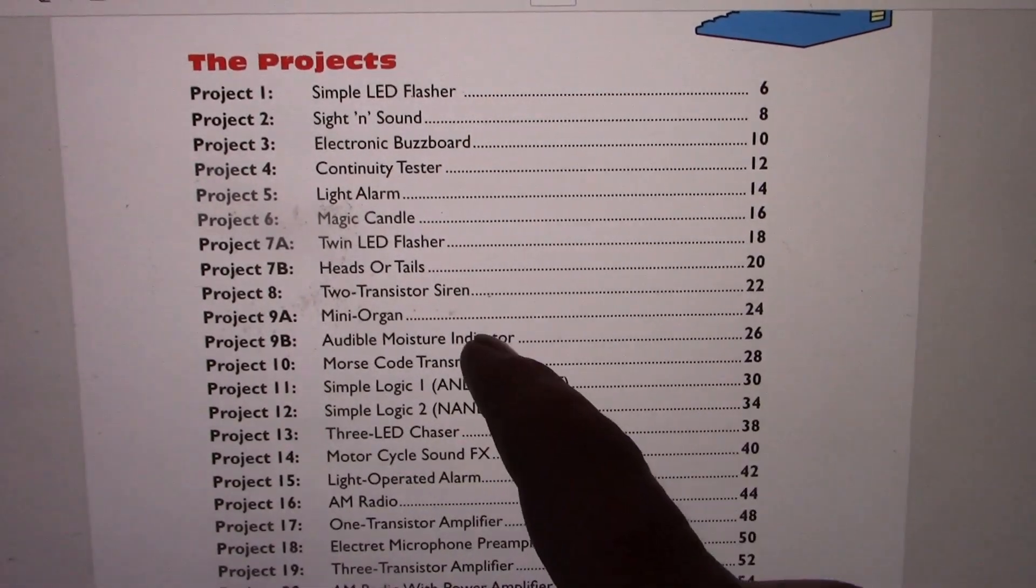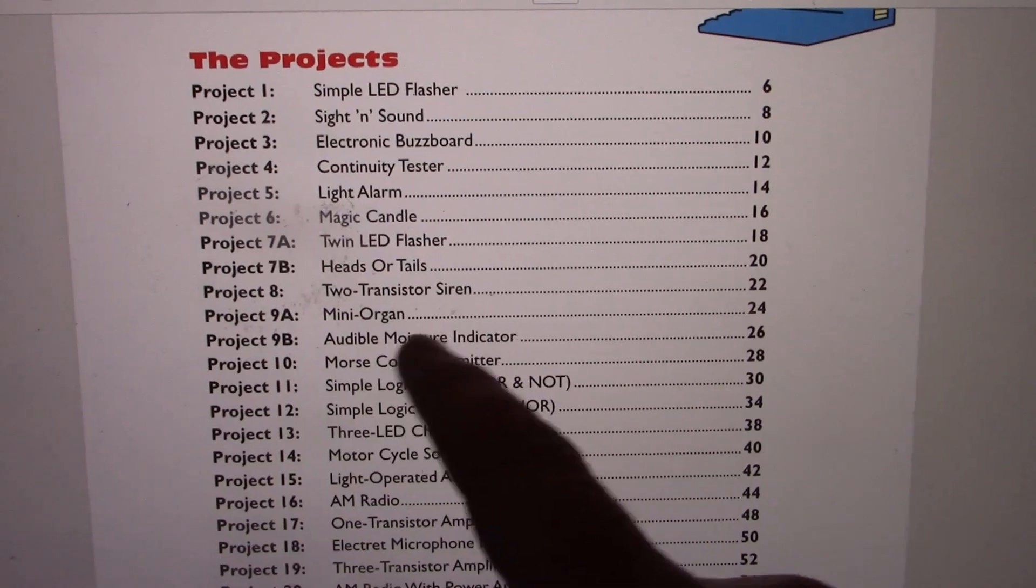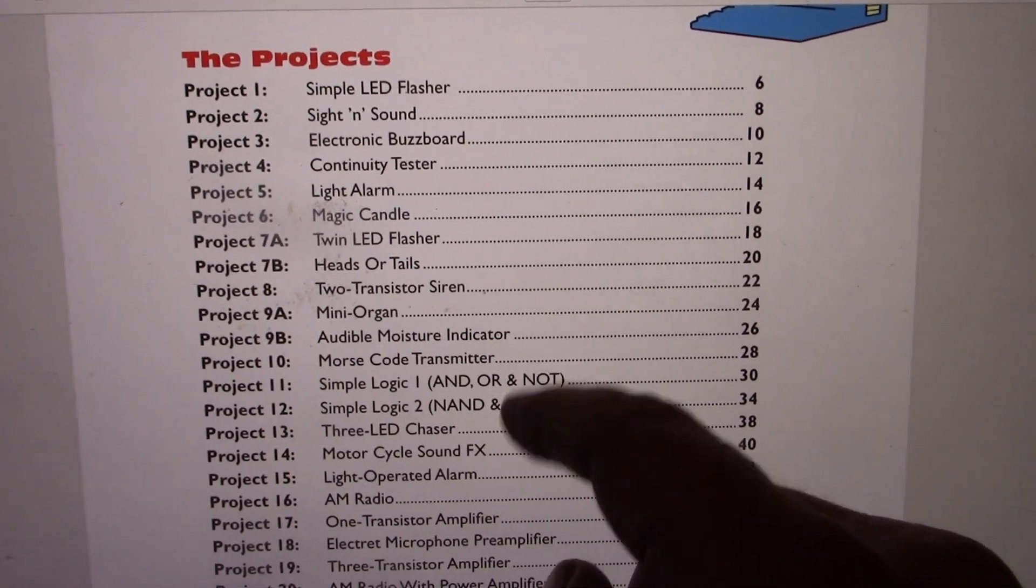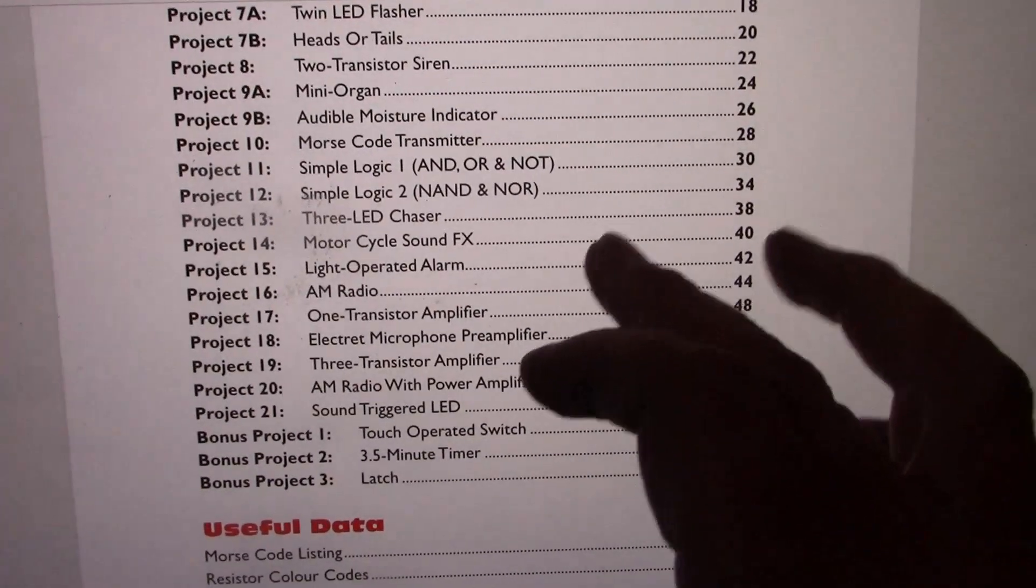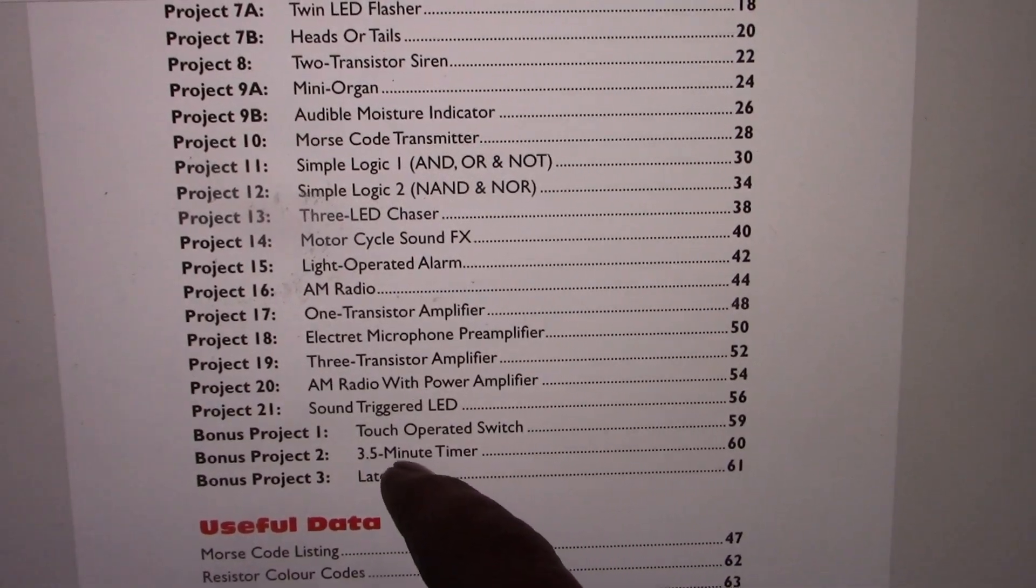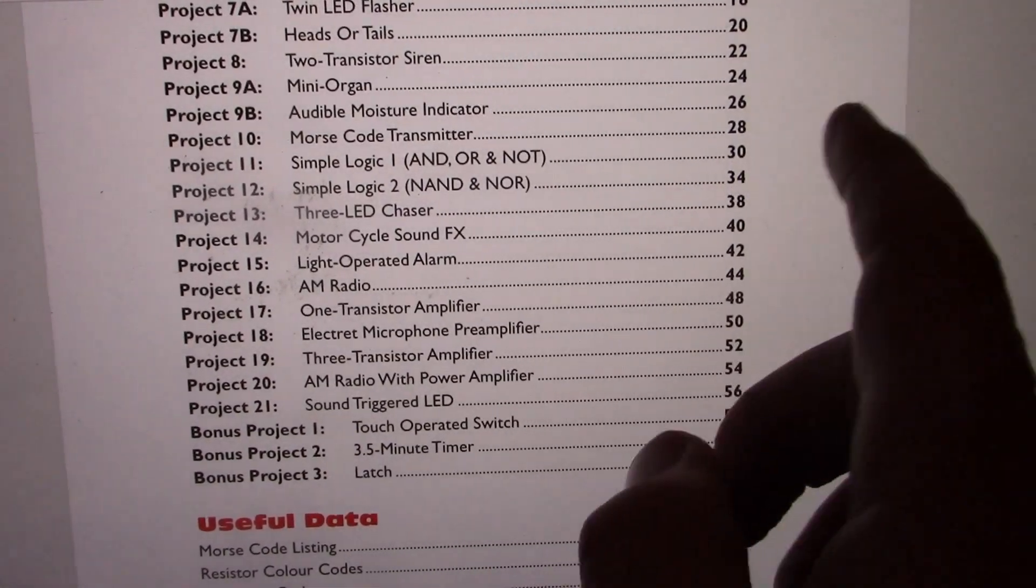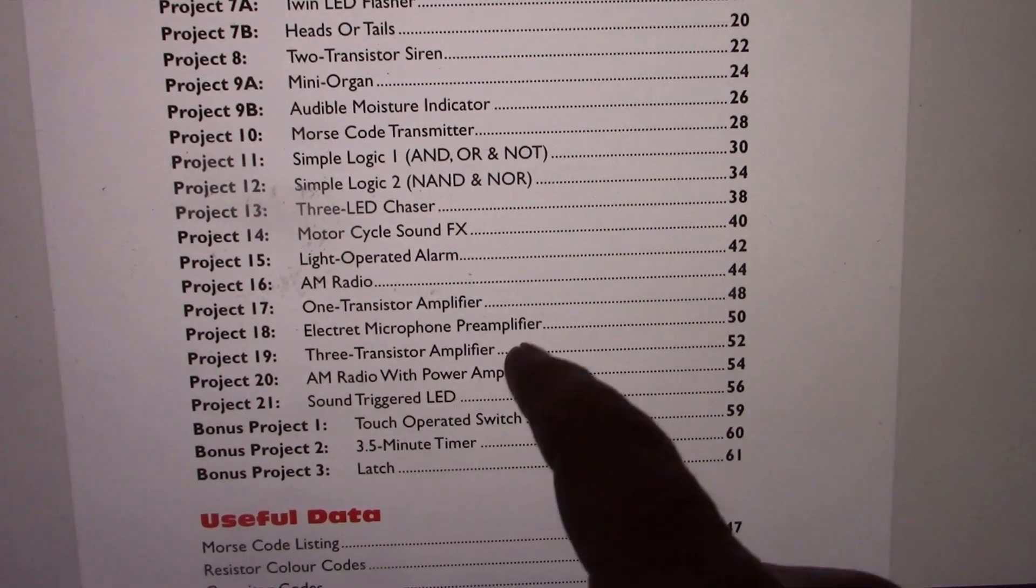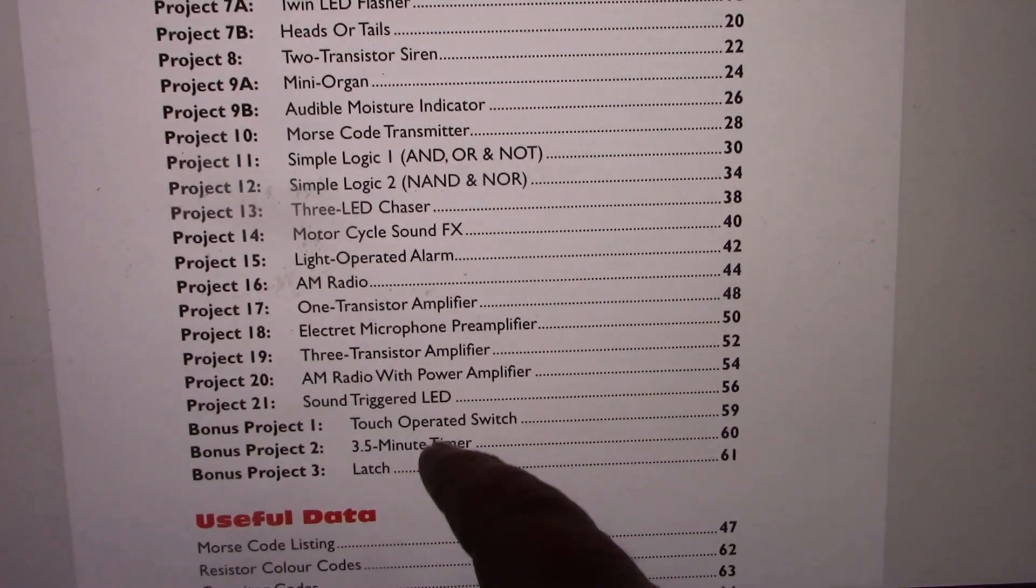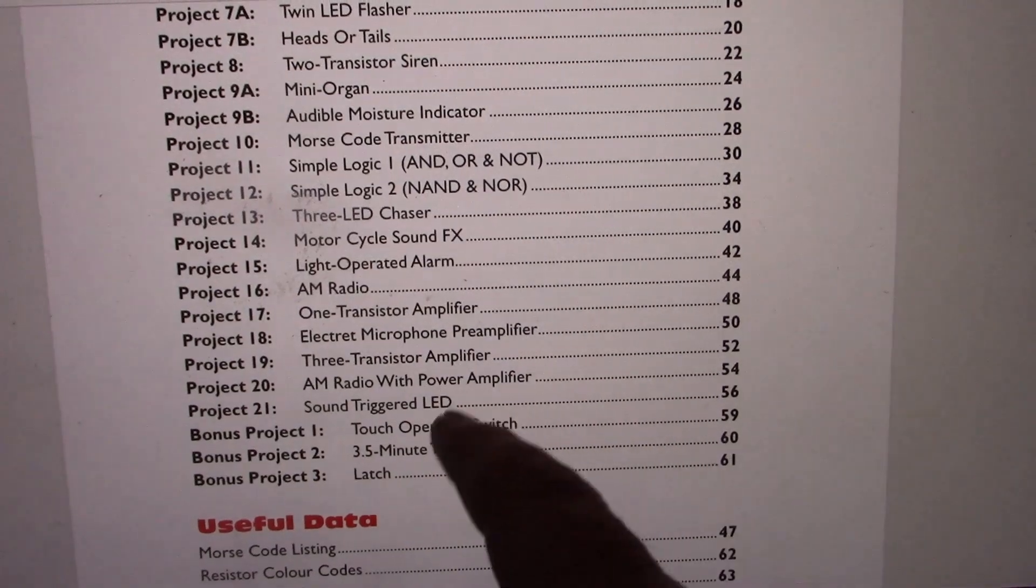Some of the projects are similar. Mini Organ, the Funway 1 had one of those. But there are some a bit different. And whereas the first Funway 1 had 20 projects, Short Circuits goes a few more projects extra.